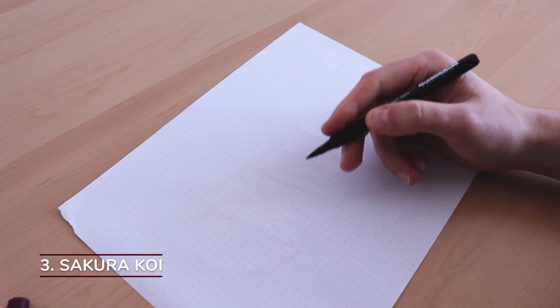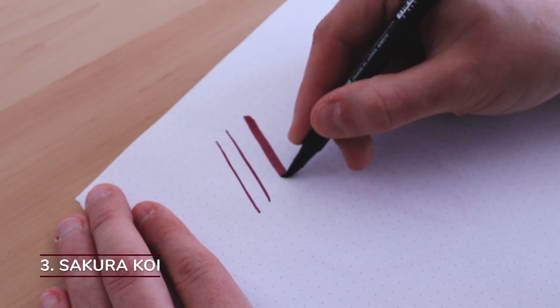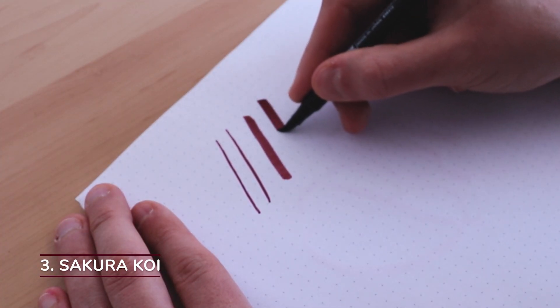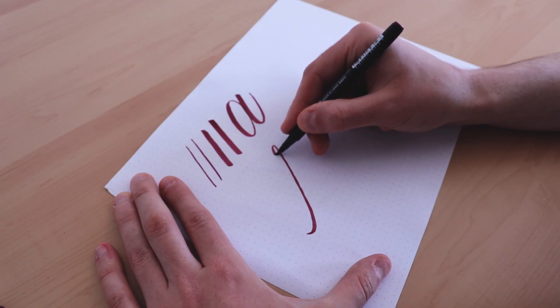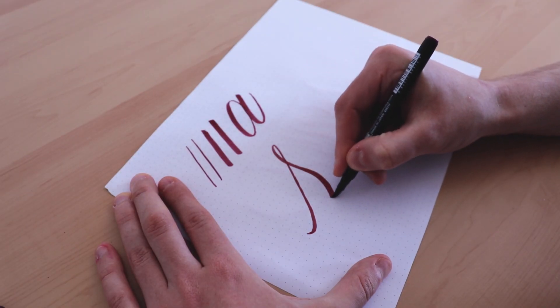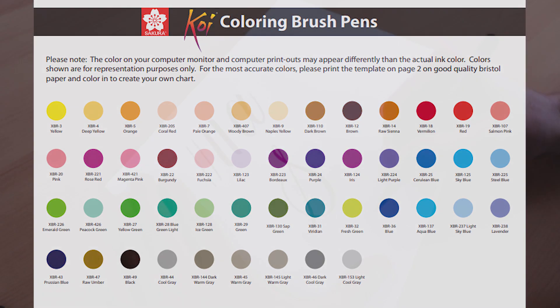Moving on we have the Sakura Koi Brush Pen. The size of the nib is medium large, the nib elasticity is mid firm, the ink flow is medium wet and the color choice it comes in 48 different colors.